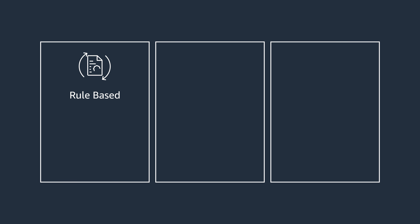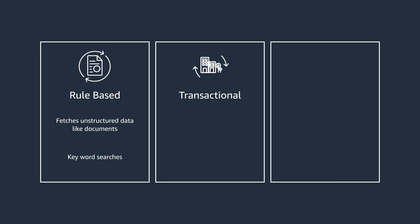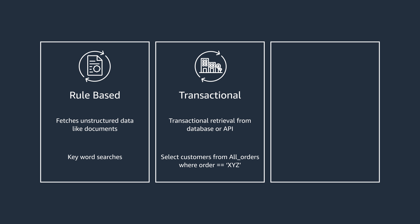Now let's cover a few different types of retrieval and see where RAG fits in. The three typical types of retrieval consist of: first, rule-based, in which the model fetches unstructured data such as documents and does keyword-based searches; and second, transaction-based, where transactional data is retrieved from a database or an API.